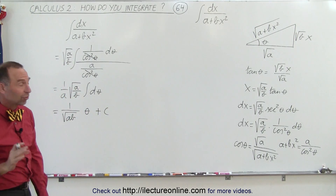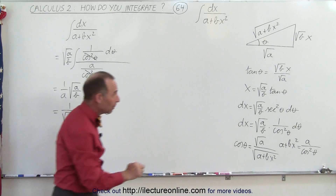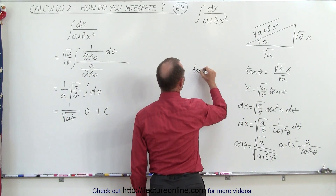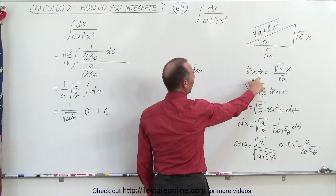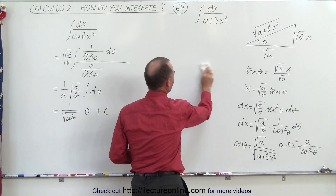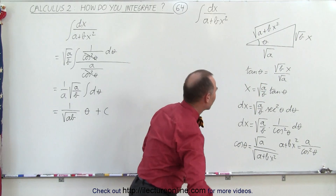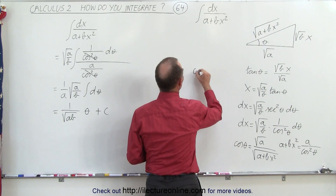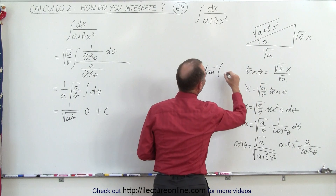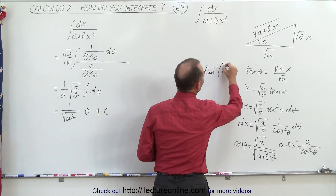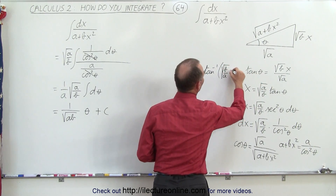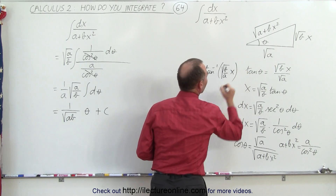So now we have to substitute back for theta. We go back over here — we already have the tangent of theta expressed — so now we can solve for theta. Theta is equal to the arctangent of the square root of b over a times x.